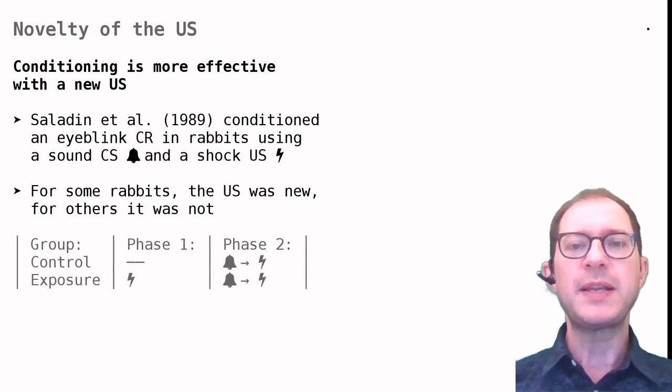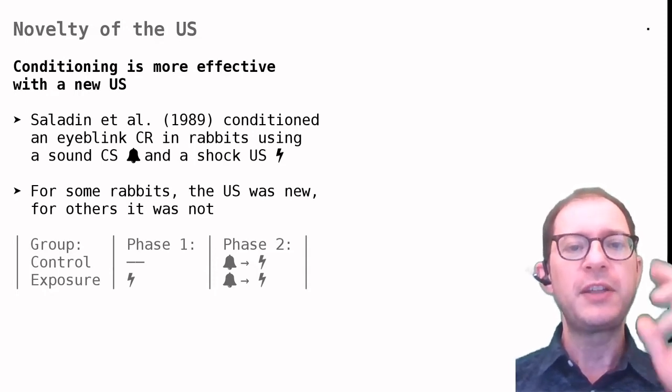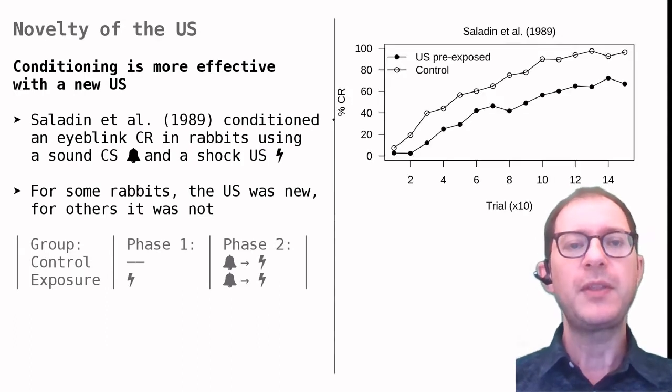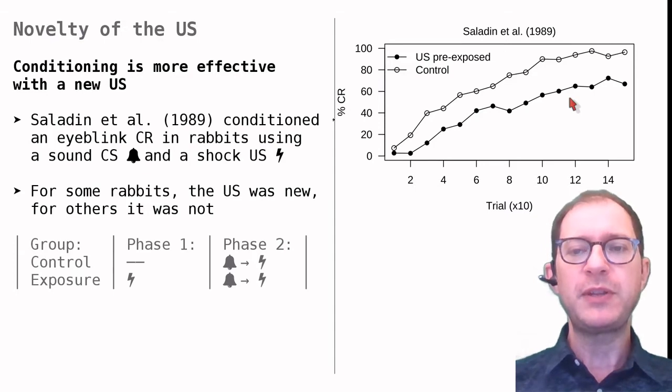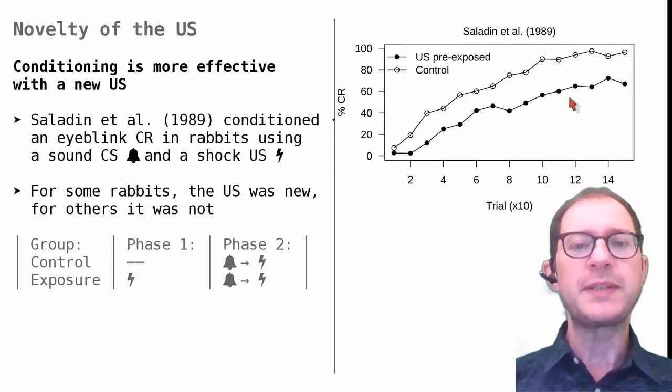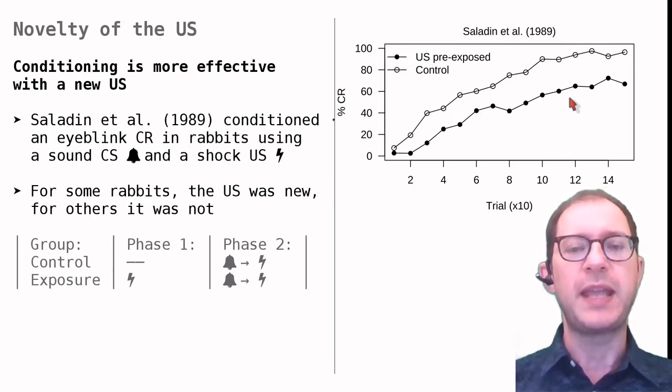In this experiment, the US was a mild electric shock delivered to the side of the eye. The results are very similar to those of the previous experiment. Even in this case, we can see that rabbits in the exposure group learn to blink to the sound more slowly than rabbits in the control group. In summary, Pavlovian conditioning is more effective when both the CS and the US are new to the animal.